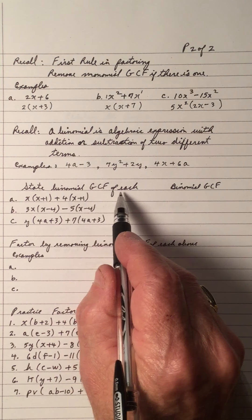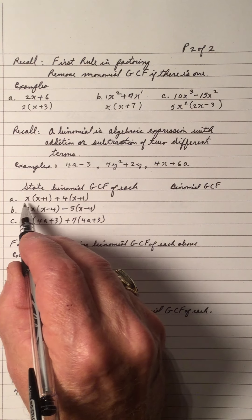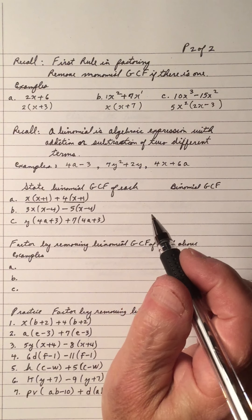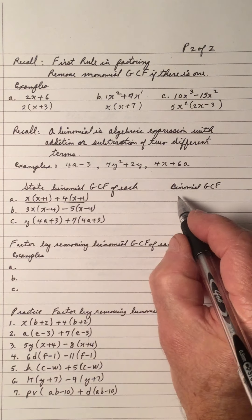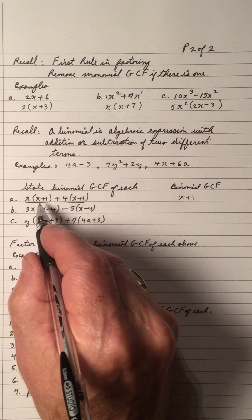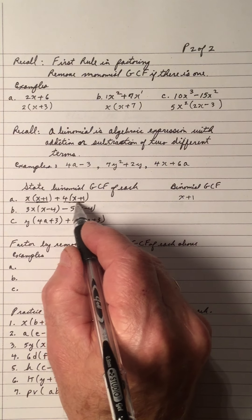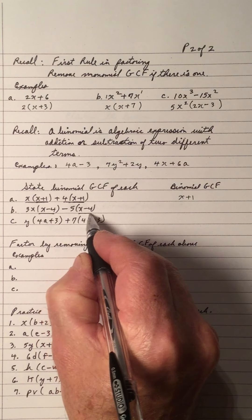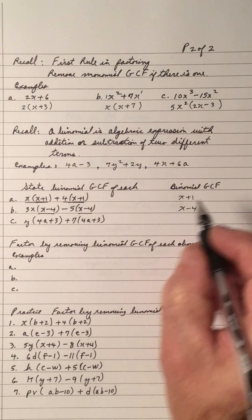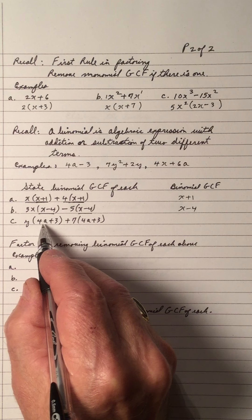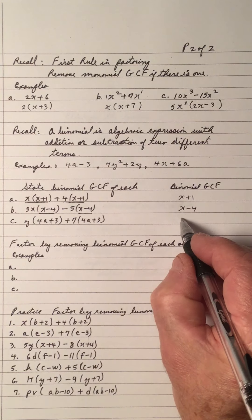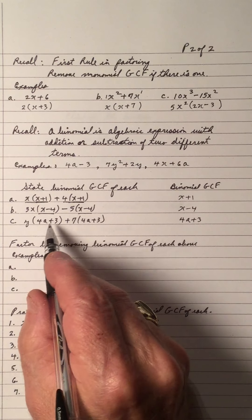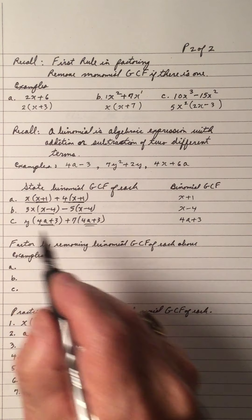State the binomial GCF of each expression. In the first pair, the binomial GCF is x plus 1 — x plus 1 appears in both expressions. In the next pair, the binomial GCF is x minus 4. And in part c, the binomial GCF is 4a plus 3 — notice it appears in each of those expressions.